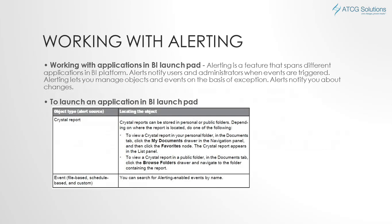Sometimes you need to work with alerting. Alerting is a feature that spans different applications in BI platform. Alerts can notify users and administrators when events are triggered, and we can use colors and notifications to notify users.